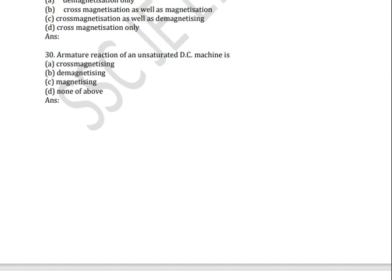Before going to today's first question, yesterday I gave this question for homework: armature reaction of an unsaturated DC machine. Some of you answered correctly — Dilip Kumar, Lingaraj Nag, Vikas Andhavarpu, and Ramesh Rocks commented. The correct answer is: armature reaction of an unsaturated DC machine is cross magnetizing.